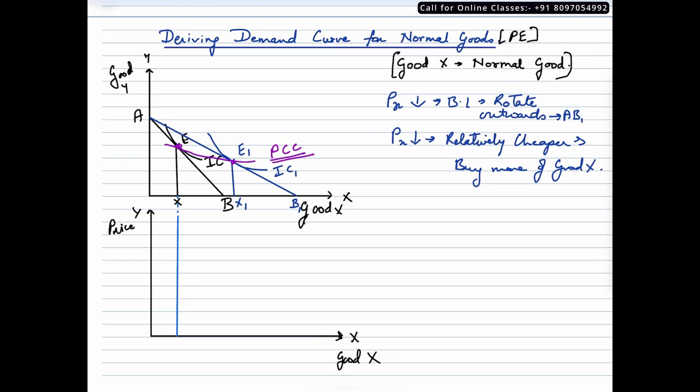Let us say the consumer is consuming OX quantity of good X, and let us suppose, since we do not have the numericals for price, we are assuming that the price is here at P. Now what did we